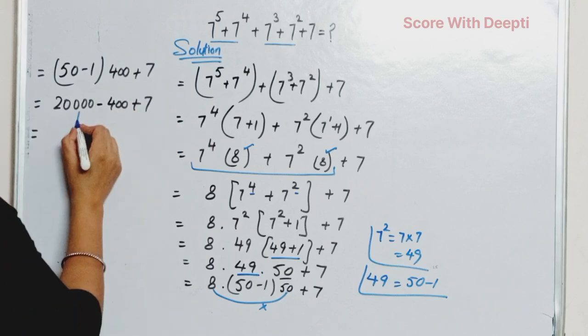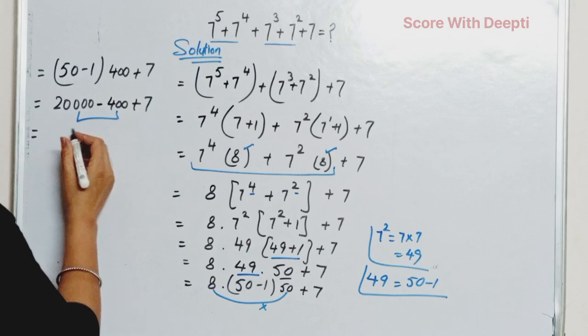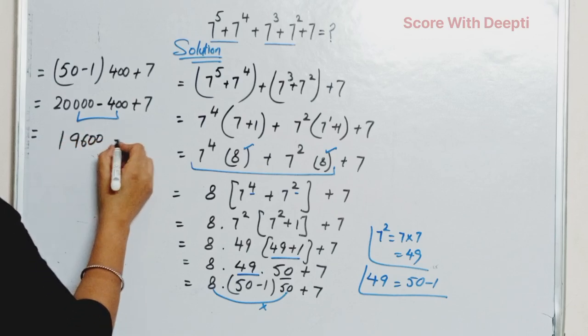Next, we subtract these two terms and get 19,600 plus 7.